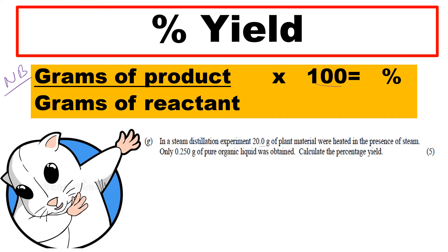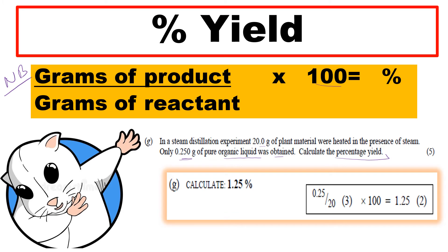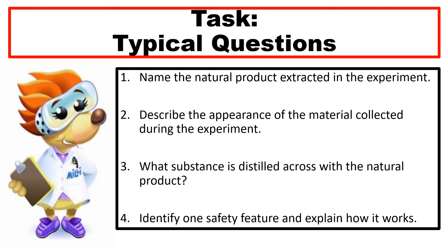Typical exam example: in a steam distillation experiment, 20 grams of plant material (cloves) was heated in the presence of steam, and only 0.25 grams of pure organic product was obtained. Calculate the percentage yield. Using the formula: 0.25 g ÷ 20 g × 100 = 1.25%. That is how you calculate percentage yield for this experiment.